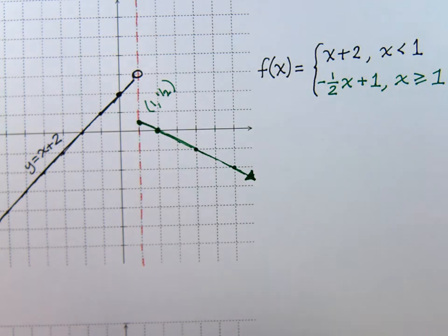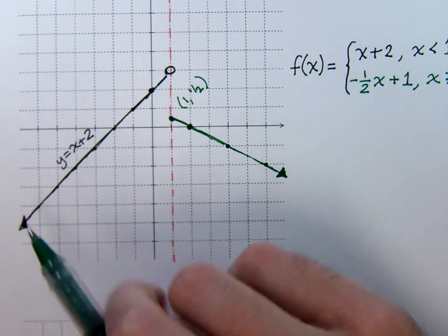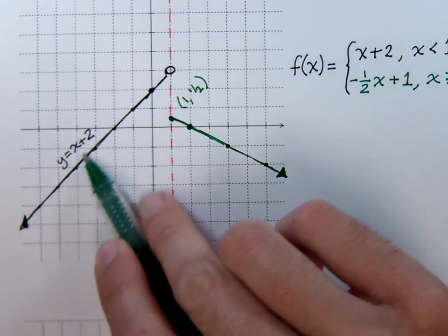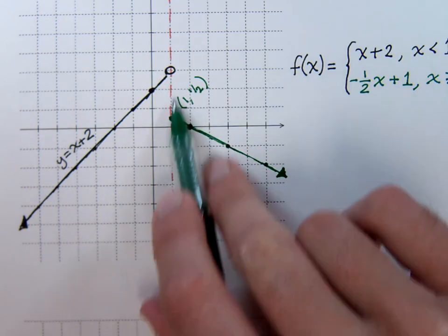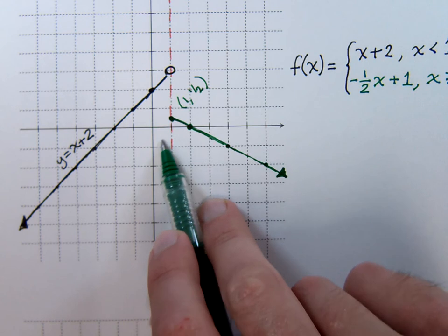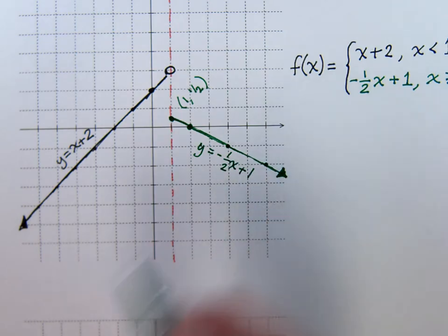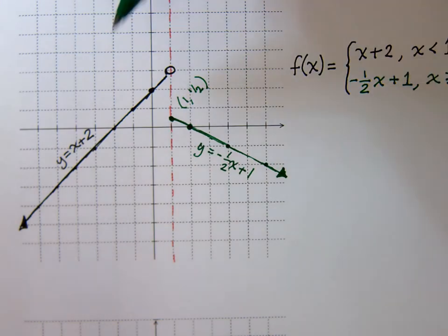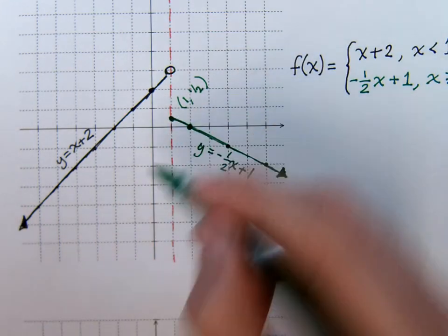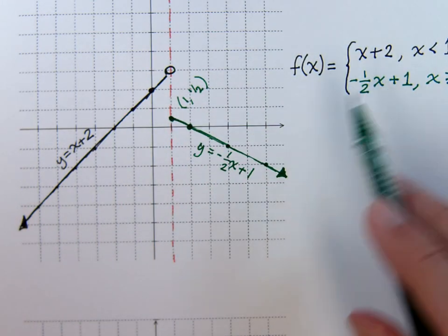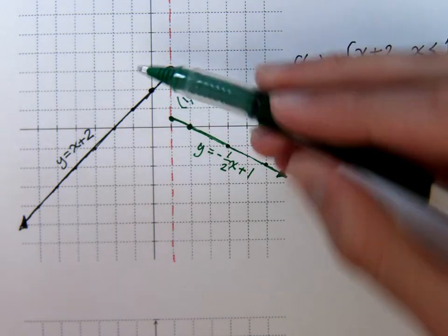So here's your piecewise defined function. For all values of x that are less than 1, you look like x plus 2. Nice positive slope of 1, starting at 2. But you stop being this line once you get here, when x equals 1. And when x equals 1, you become this guy right here. You become negative 1 half x plus 1. If you could imagine this being extended, it would keep on going that way. But what did I do? I took my scissors and I cut it off right here. Same thing with the x plus 2. He would have kept going and going, but I didn't want the whole thing. I wanted to cut him off when x is equal to 1 and just keep the stuff that's on the left.